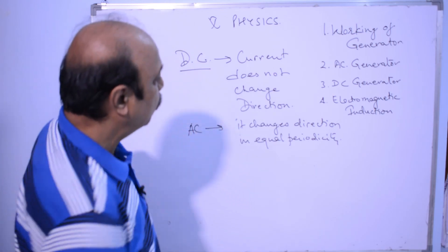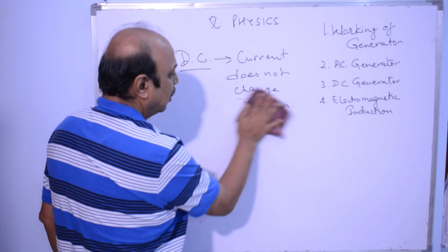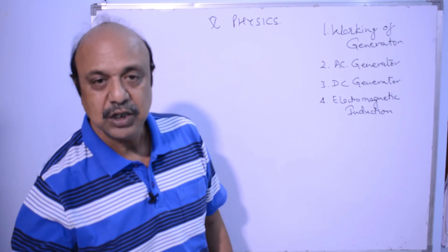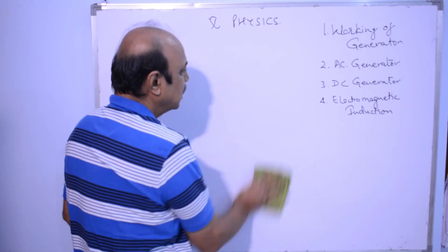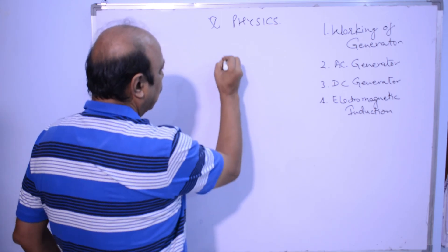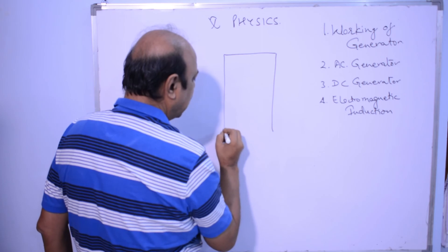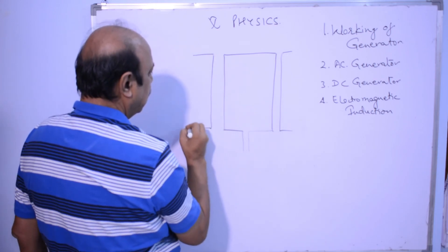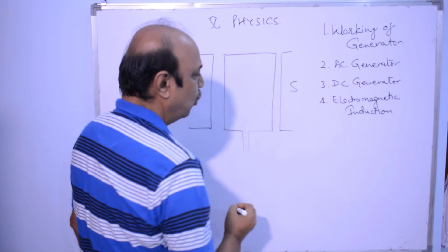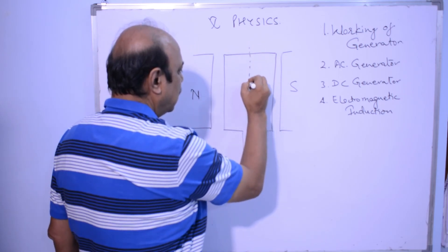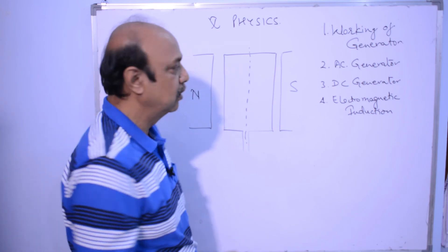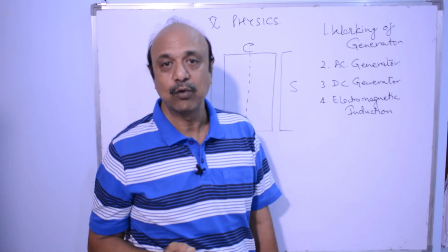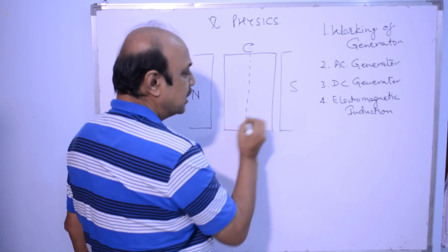Let us move on to the topic for today — the first part is the working of a generator. As we studied in the case of motors, let us take a similar example. Let us place a coil — a current-carrying coil — in a magnetic field. Let this be the north pole and this be the south pole, supported in the center through a shaft. If I apply a clockwise rotation to it, I am giving a mechanical force to the rotor.